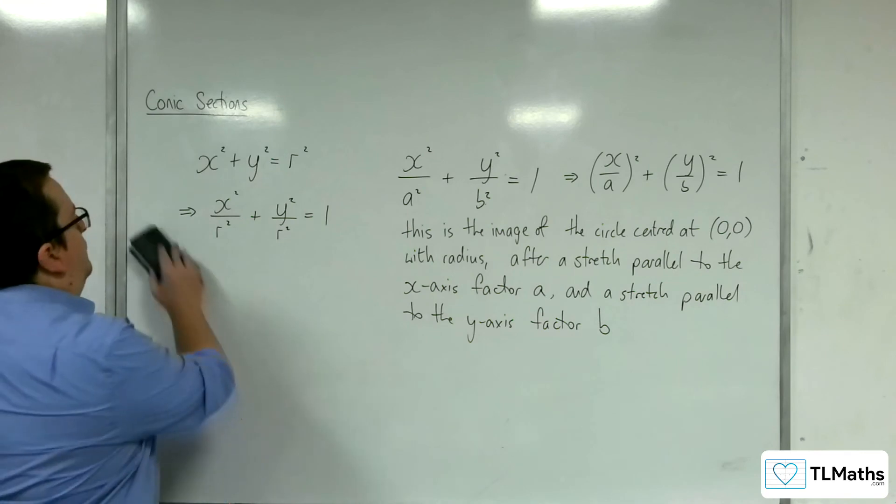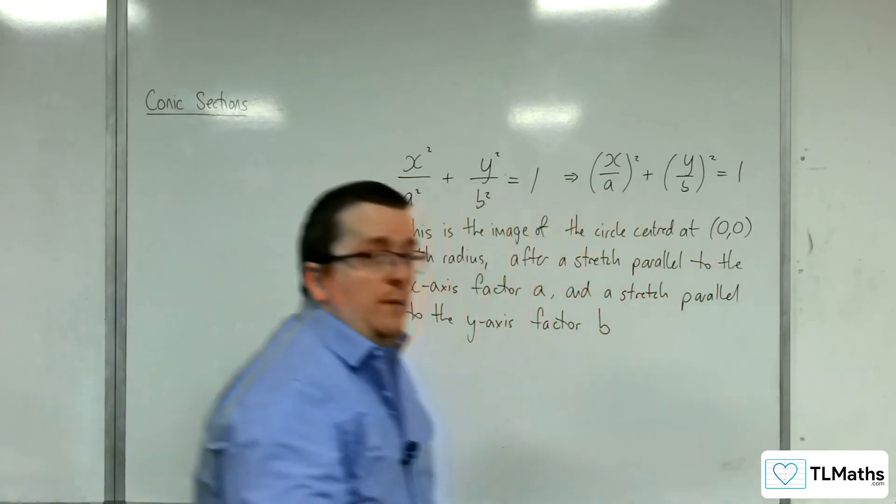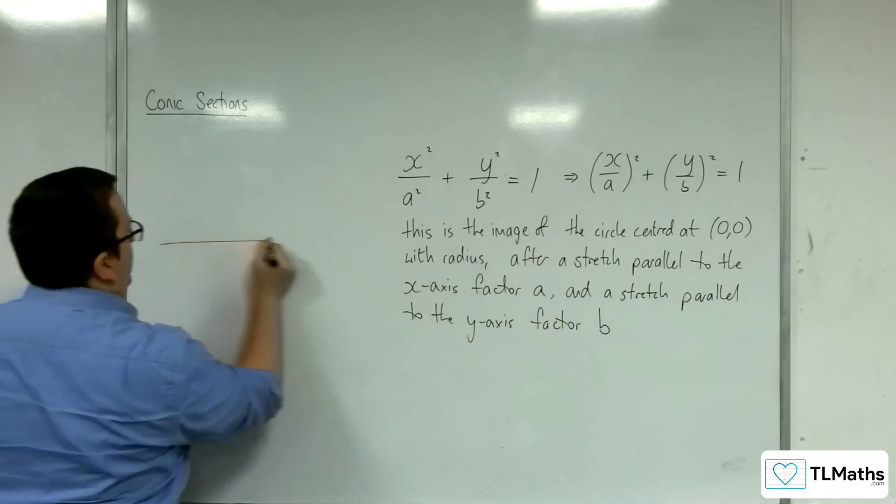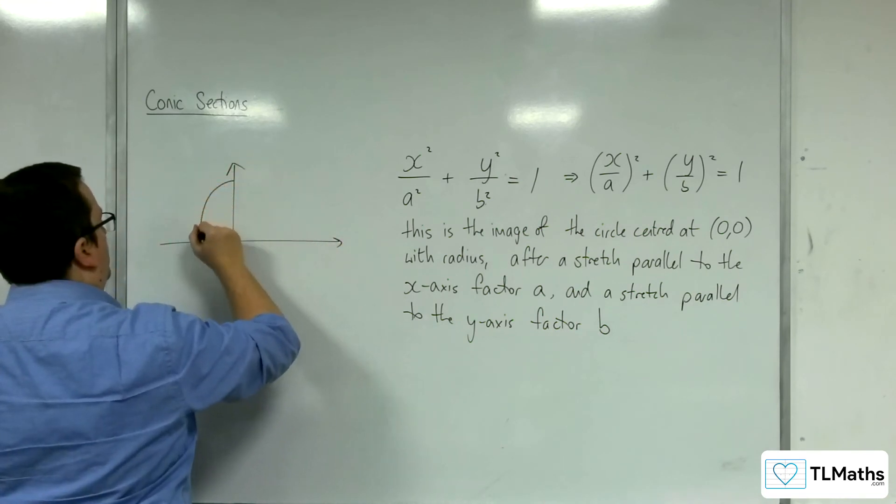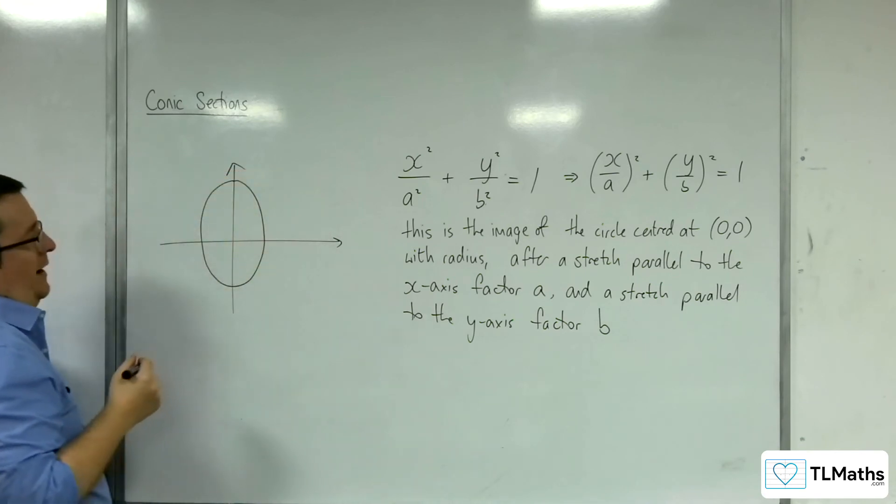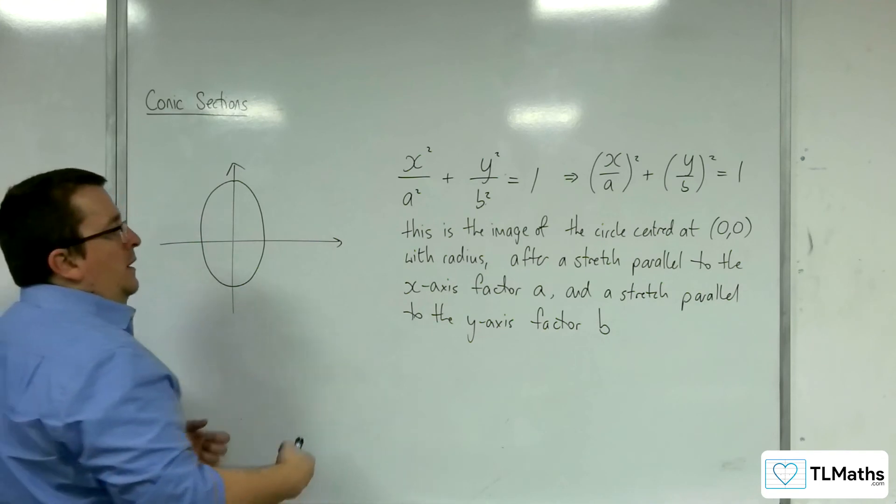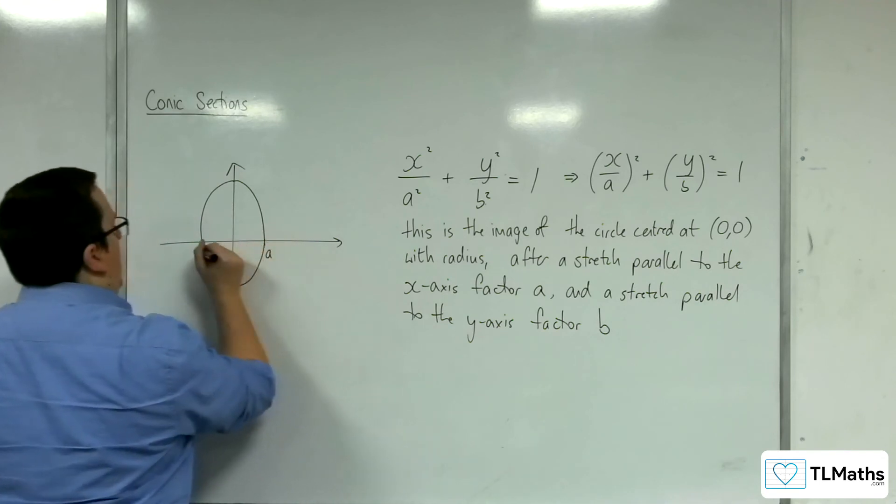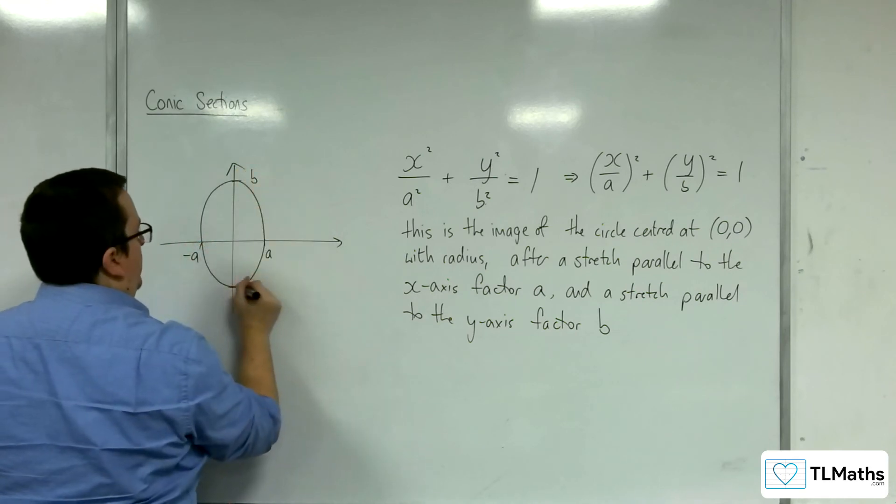So once you've got it in that form, we're going to be able to sketch the ellipse. The ellipses are quite difficult, quite a challenge to draw, okay? But the idea then is that it would be going between a and minus a and b and minus b.